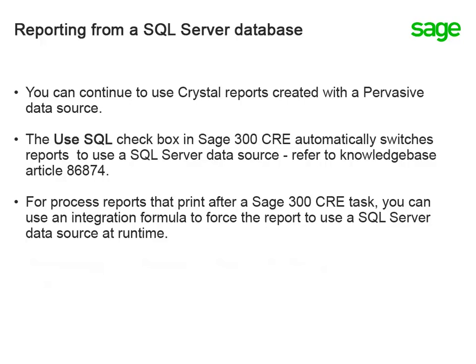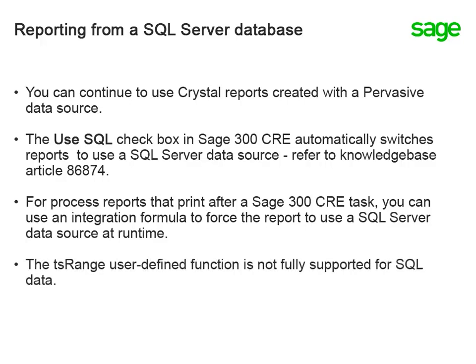For reports that automatically print after a 300 CRE task, you're not able to access the Use SQL checkbox. But you can add an integration formula to the report design so that it will always run using SQL data. We'll go over integration formulas in the next topic. All the 300 CRE user-defined functions are supported for SQL data, except TS Range. TS Range puts in place the Ranges button in the Print Selection window, and is not available when you generate a report as a desktop tab, and may not work when you generate the report from the Reports menu.